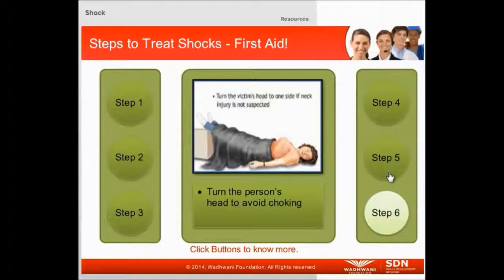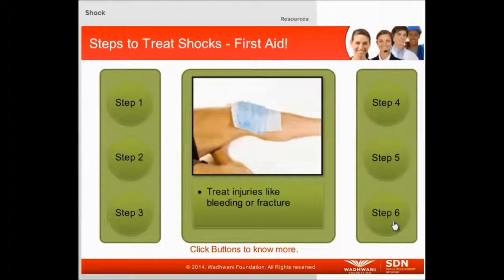Step 5: Turn the person on his or her side to prevent choking in case of vomiting or bleeding from the mouth. Step 6: Seek treatment for injuries such as bleeding or broken bones. Further treatment depends on the type of shock the person has experienced.